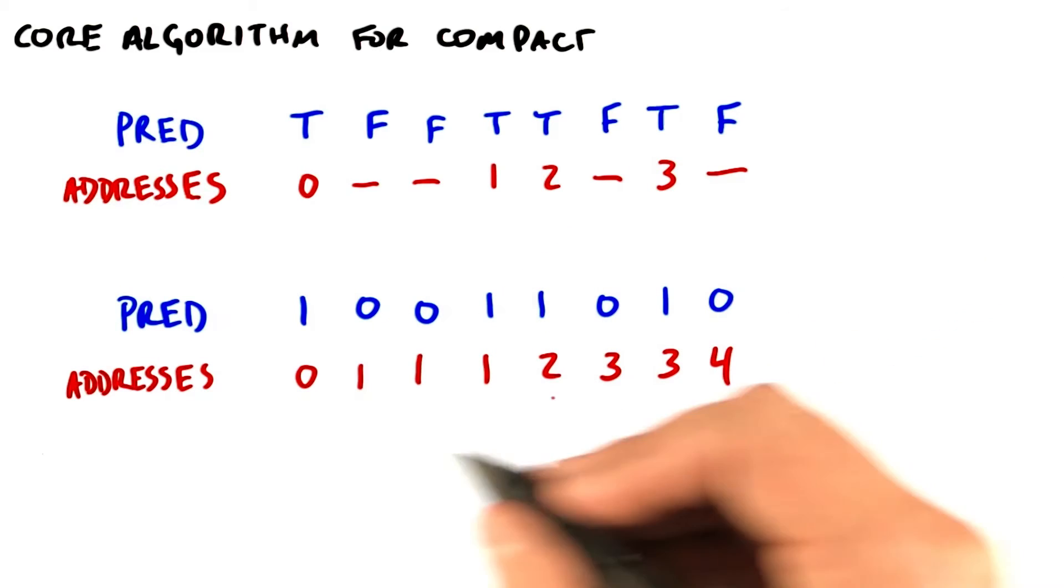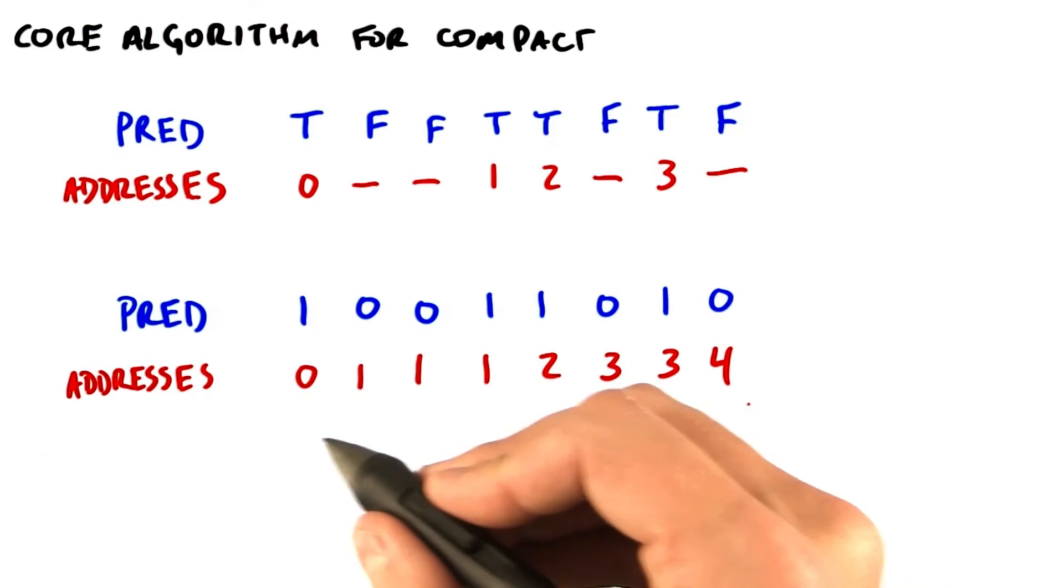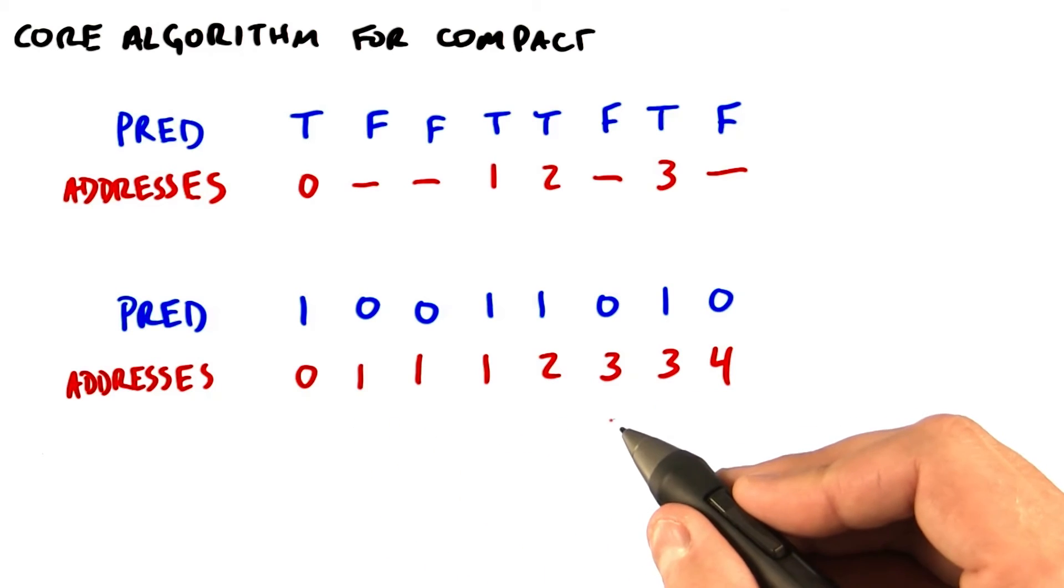And rather than don't cares, I'm actually going to fill in some values here. So we're going to have the string 0, 1, 1, 1, 2, 3, 3, 4.